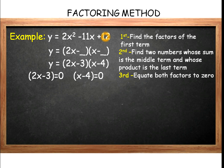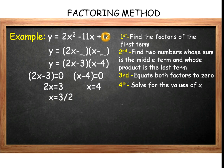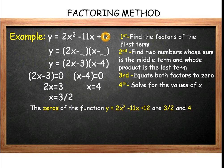Transposing negative 3 to the other side gives us 2x equals 3, and dividing both sides by 2 gives us x equals 3 over 2. Transposing negative 4 to the other side gives us positive 4. Thus, the zeros of the function y equals 2x squared minus 11x plus 12 are 3 halves and positive 4.